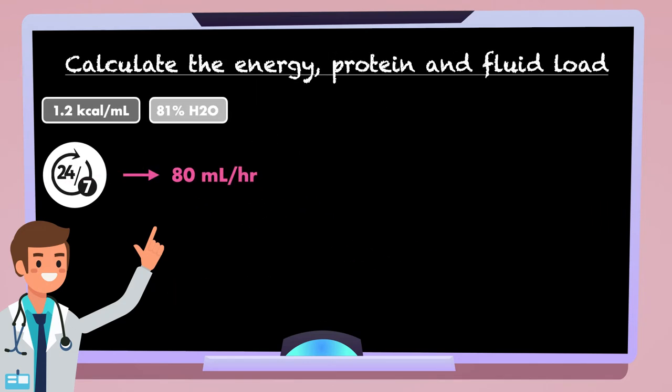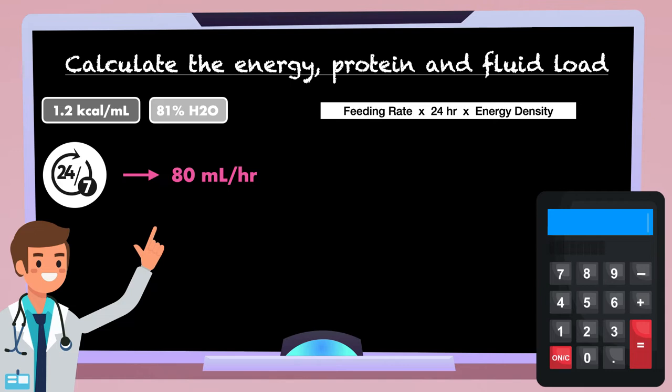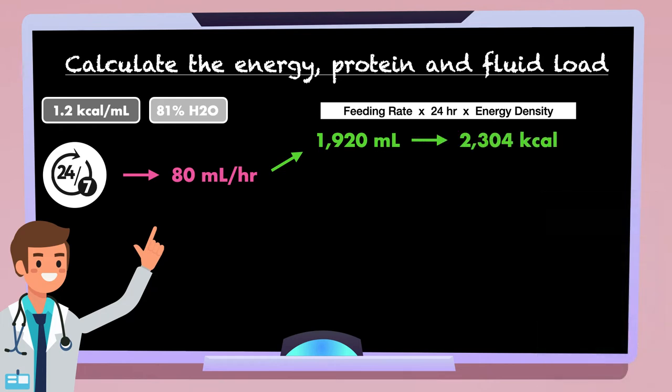From there, we will use the feeding rate to calculate the energy, protein, and fluid load. For the energy load, you multiply the feeding rate by 24 hours and then multiply that result by the energy density. So, we multiply 80 by 24 and get 1920. Then we multiply 1920 by the energy density of 1.2 and end up with a final energy load of 2304 calories.